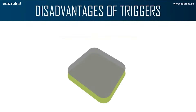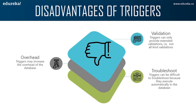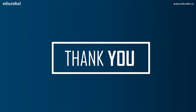The disadvantages of a trigger: triggers can only provide extended validation — not all kinds of validations. For simple validations you cannot use NOT NULL, UNIQUE, CHECK, and FOREIGN KEY constraints in a given trigger. Next, triggers may increase the overhead of a database. Finally, triggers can be difficult to troubleshoot because they execute automatically in the database and may not be visible to client applications. This brings us to the end of this triggers in SQL session. I hope you understood the concepts. Thank you and have a great day.